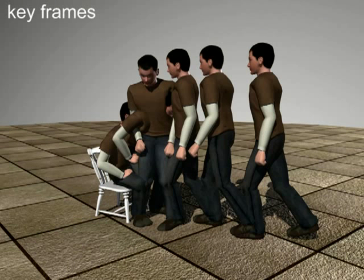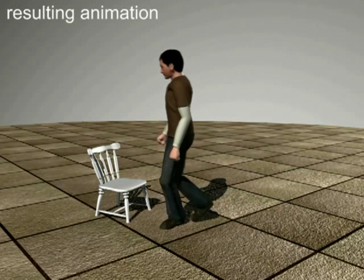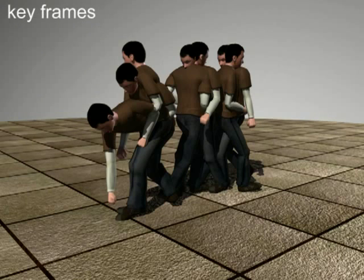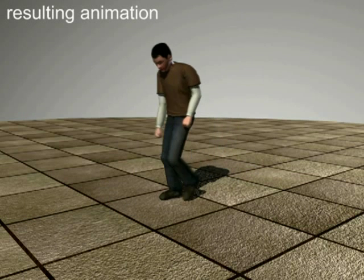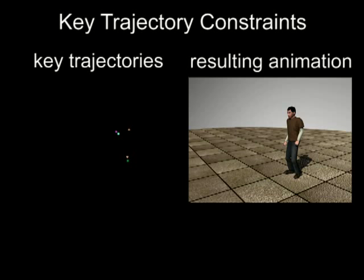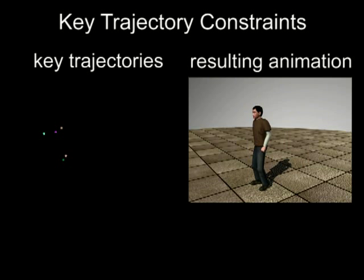The user defines a sparse set of keyframes and foot contact constraints to generate walking and sitting down. Walking and picking up an object. The user specifies a small set of key trajectories to generate a jumping motion.